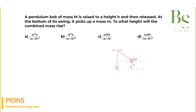When it is released from this point, it comes back down and finds another mass placed at the bottom — let's call this small m. This small m gets stuck with capital M. They combine together and rise to a certain height, which we call h dash.